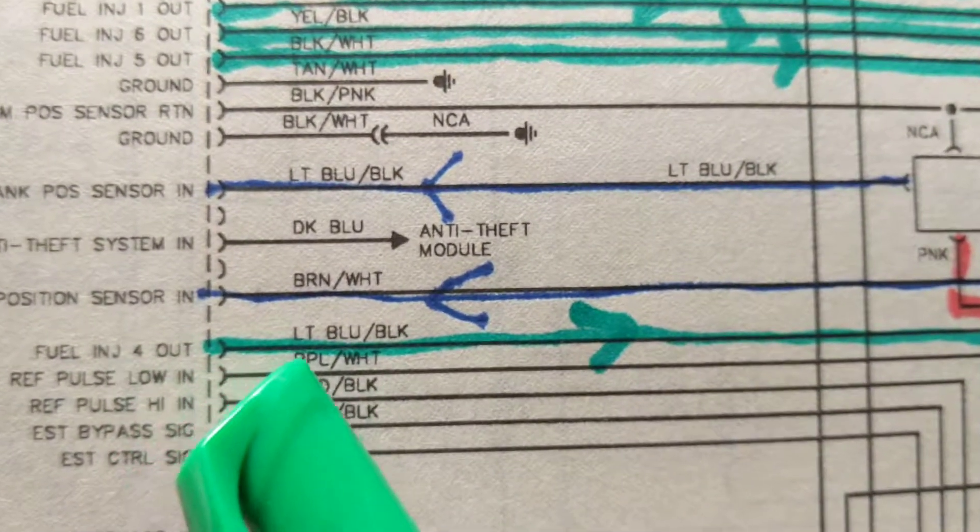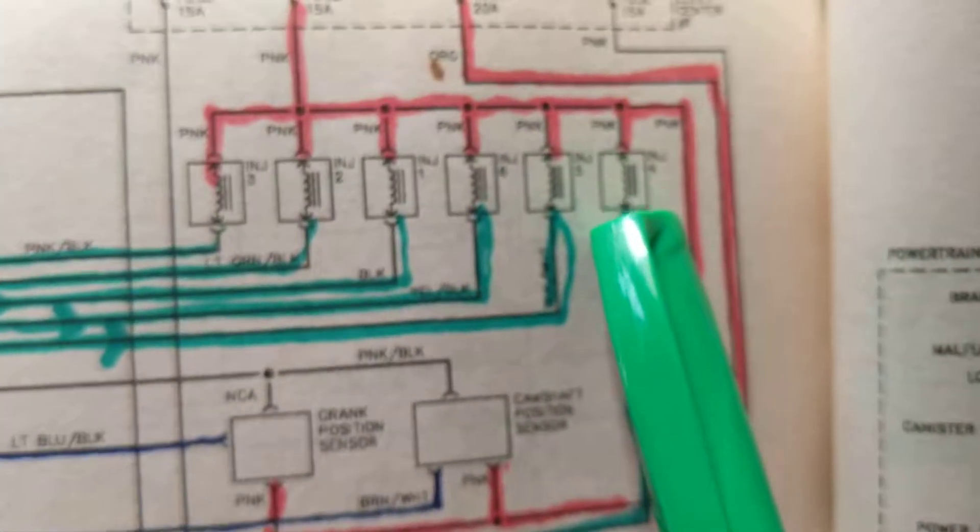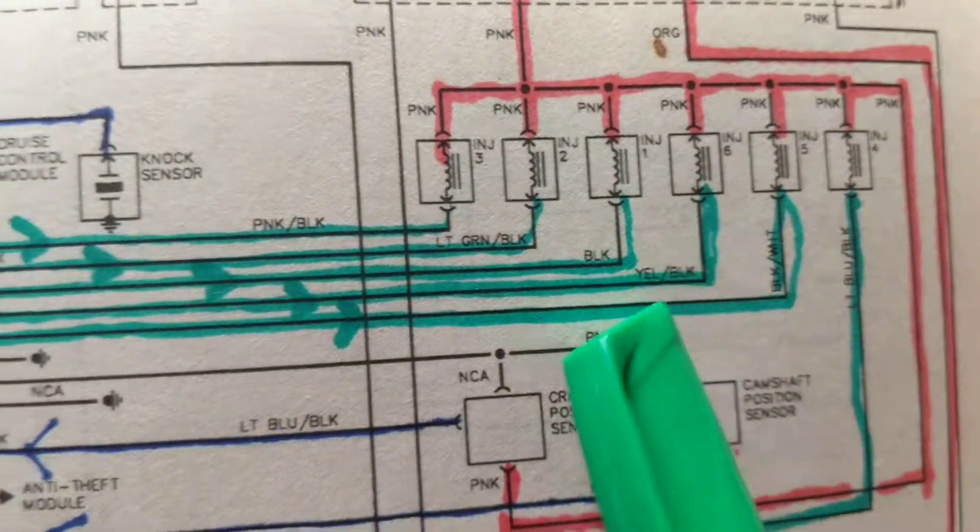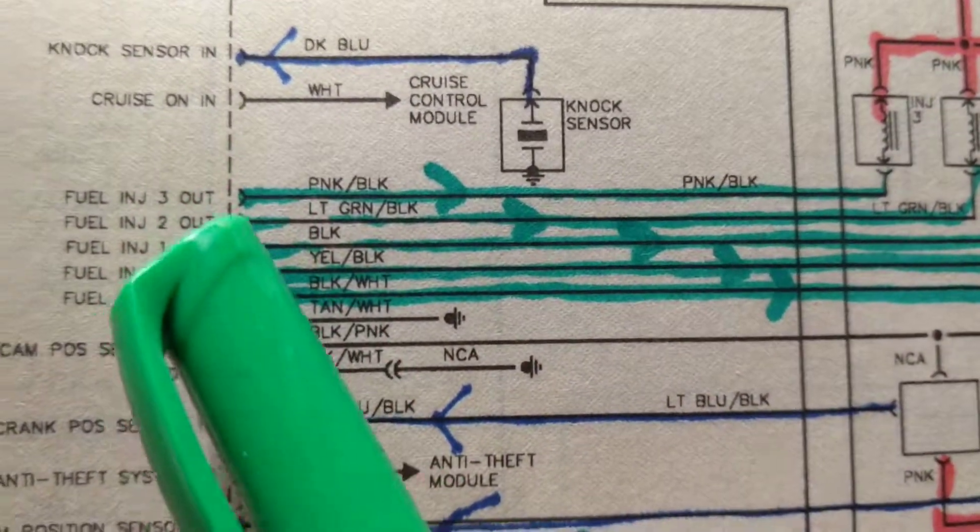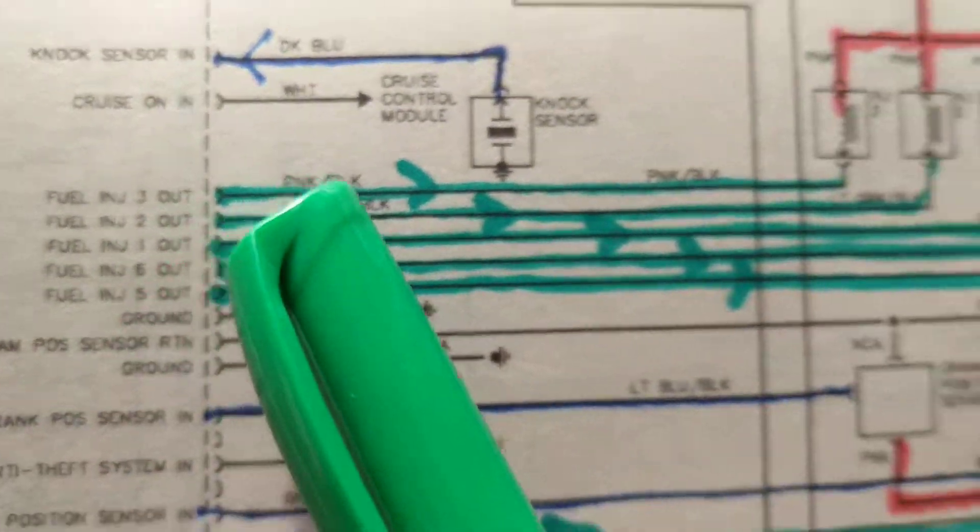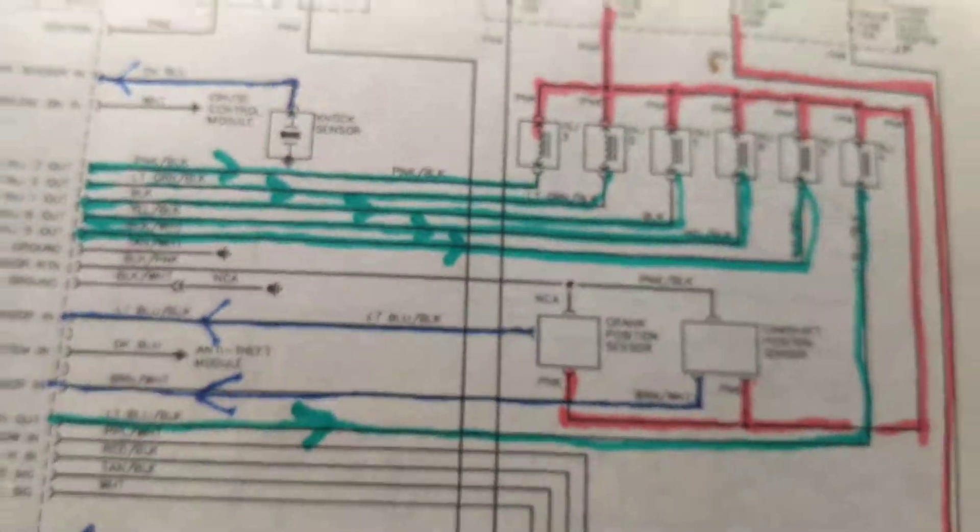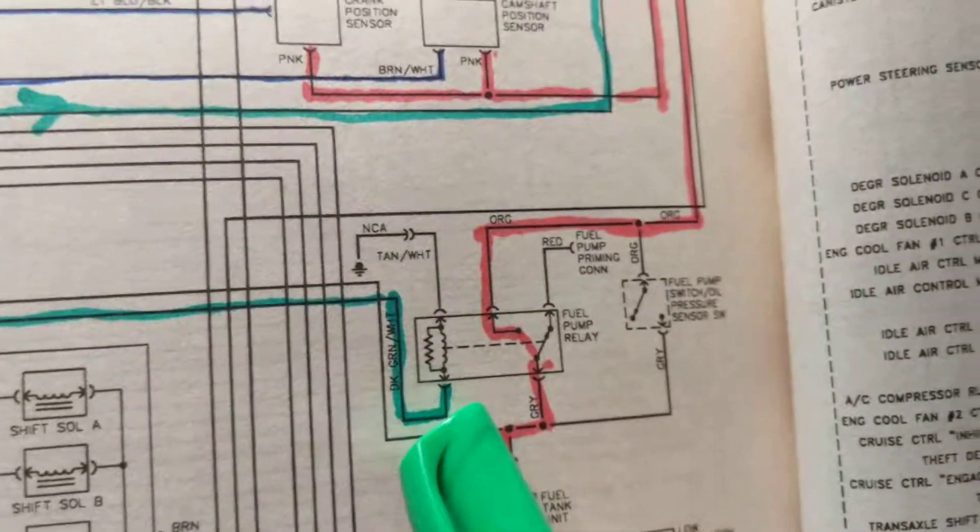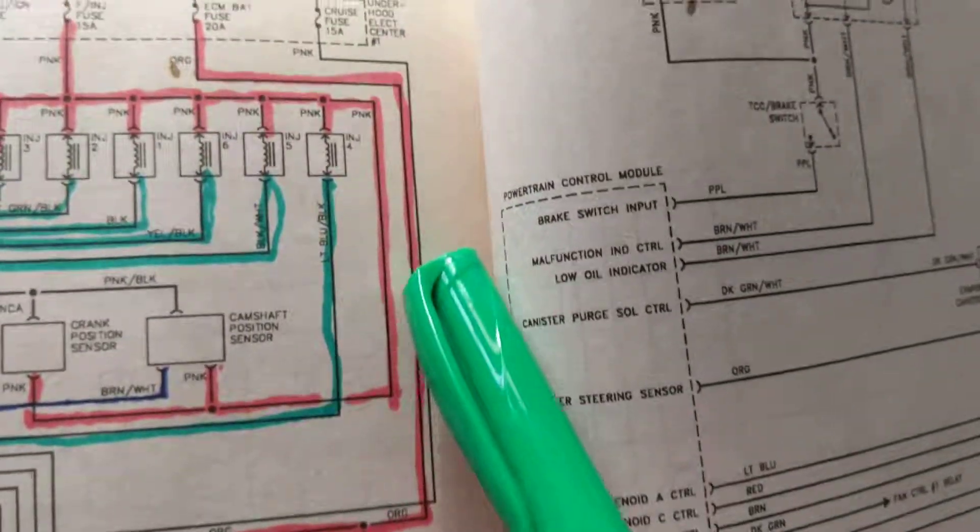So therefore, like we said, fuel injector four is this one, controlling the other side of it, the ground. These grounds are controlled by this - three, two, and one, and six and five are controlled by the PCM. So these are outputs. So remember, sensors are inputs, as you can see. Like we said, the fuel pump also...